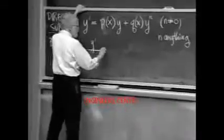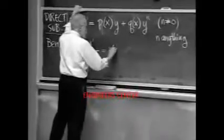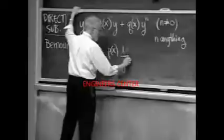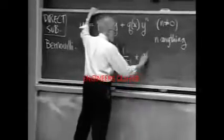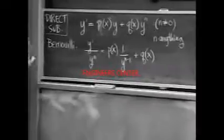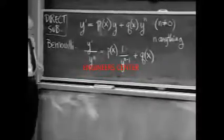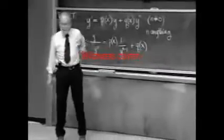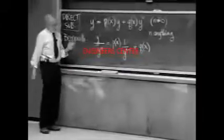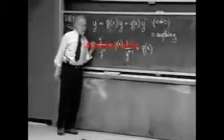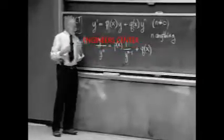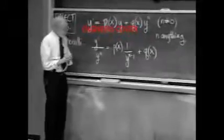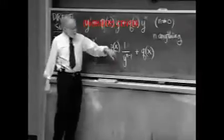So, y prime over y to the n is equal to p of x times (1 over y to the n minus 1), right? Plus q of x. Well, that certainly doesn't look any better than what I started with. And, in your terms, it probably looks somewhat worse because it's got all those y's in the denominator, and who wants to see them there? But look at it. In this very slightly transformed Bernoulli equation is a linear equation struggling to be free. Where is it?